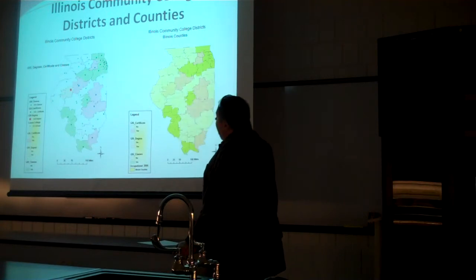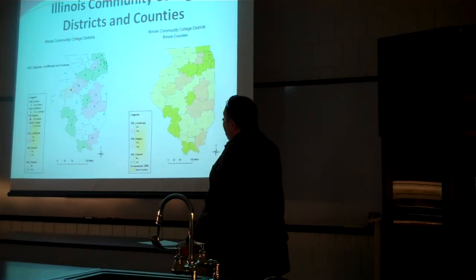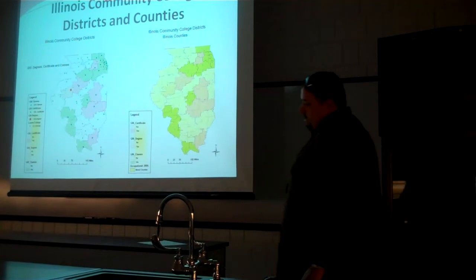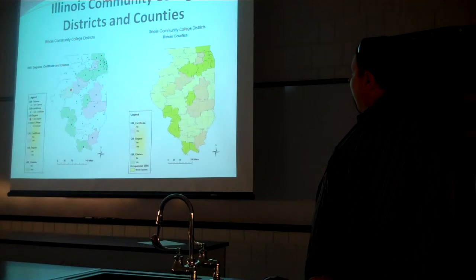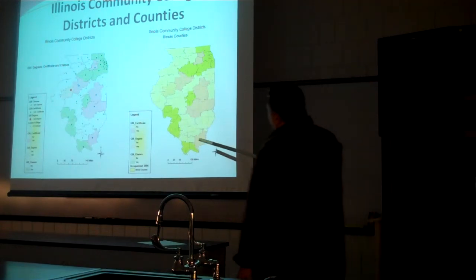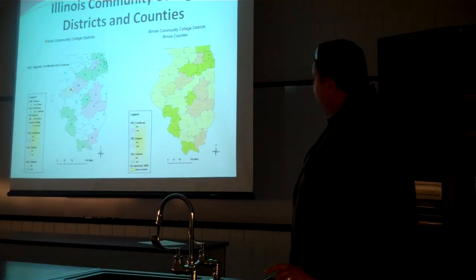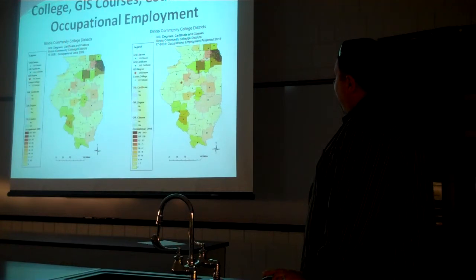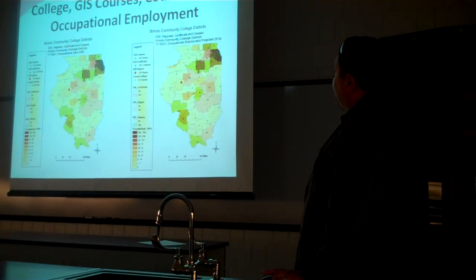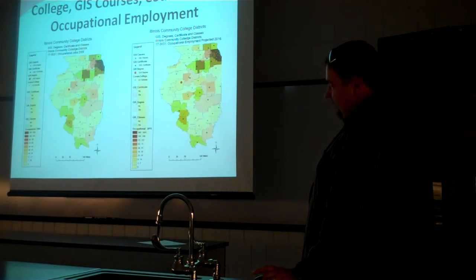These are the different junior college school districts. The purple represents certificates, the green is classes, and the rose color is a degree. In this version I laid it over a county map. This next one has a lot of different layers — the colleges, the college districts, and the occupational jobs for 2006 and 2016.